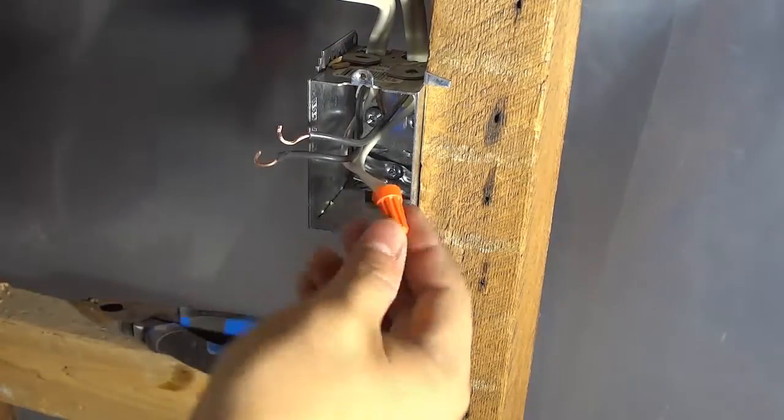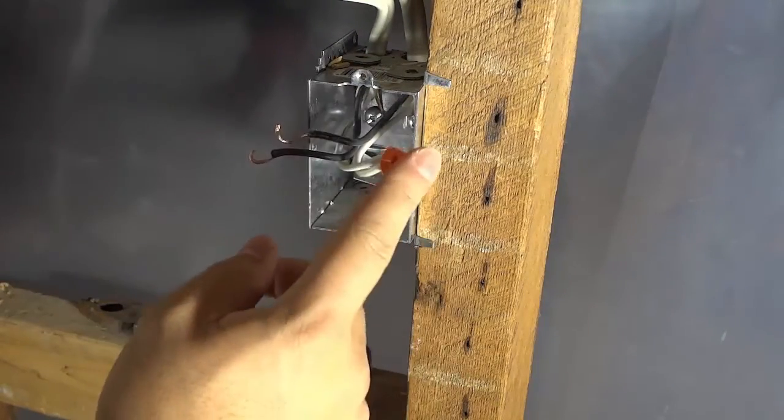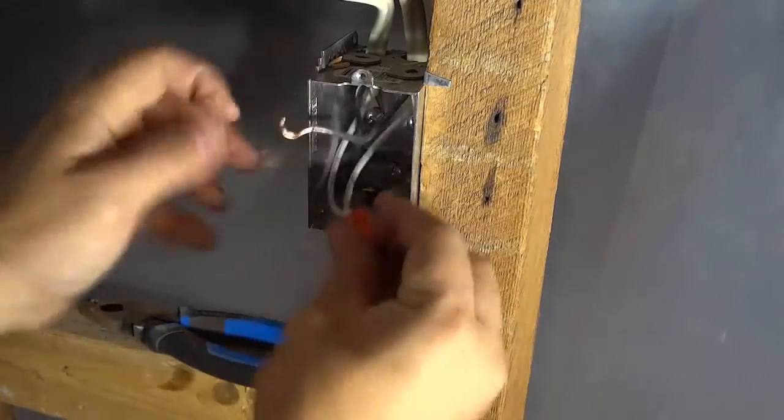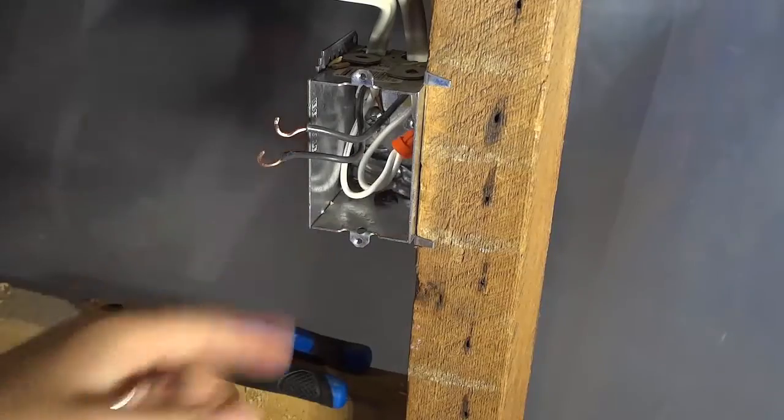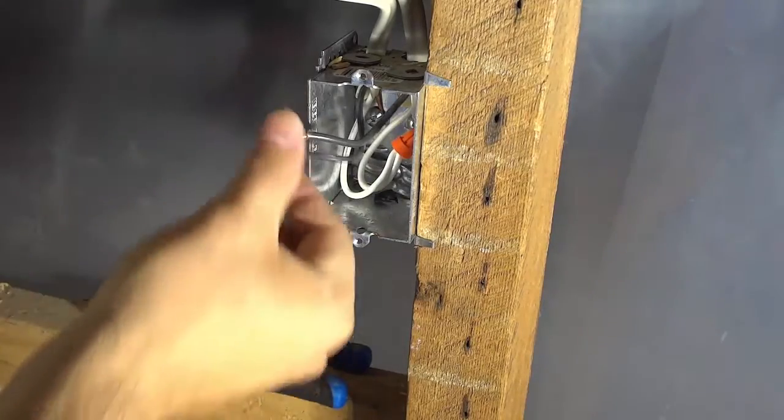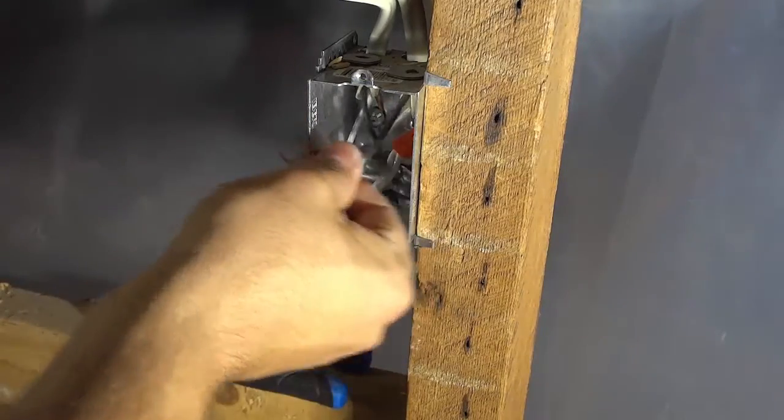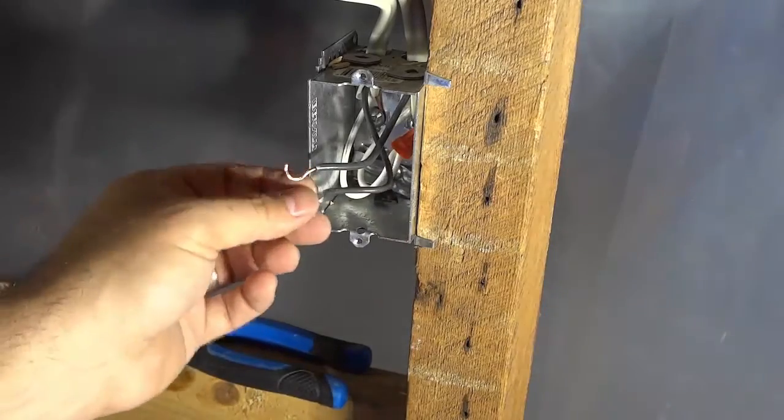And then once you've twisted those two neutral wires together, you can go ahead and tuck them into the box. I like to bring them nicely all the way to the back because that gives me more than enough room to work with these two hot wires when I'm actually wiring up the light switch.